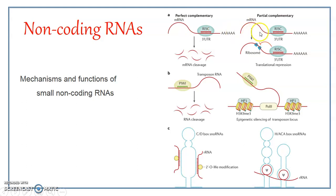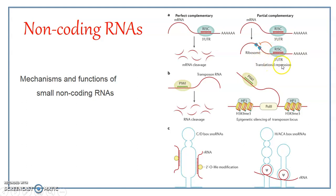Yet another type of non-coding RNA — the microRNA — acts upon the mRNA but without bringing about any cleavage. Instead, it brings about translational repression. The RNA is produced and remains intact, but the complex formed of the microRNA with proteins brings about translational repression, so translation does not proceed. The mRNA will remain intact.